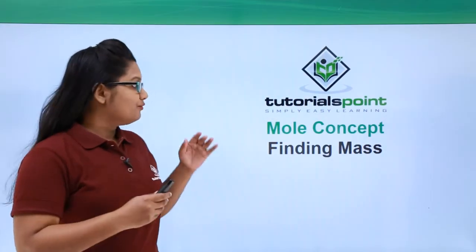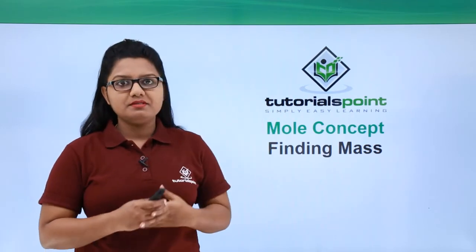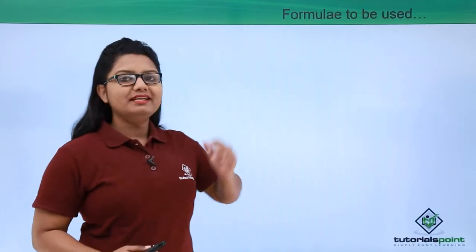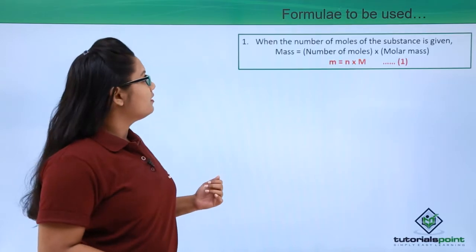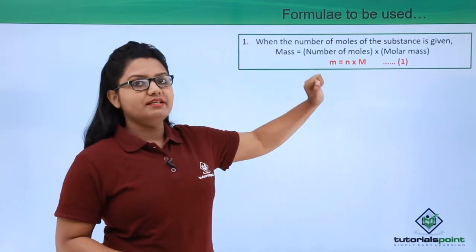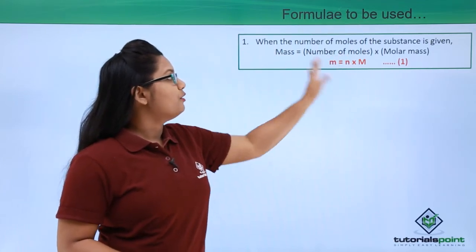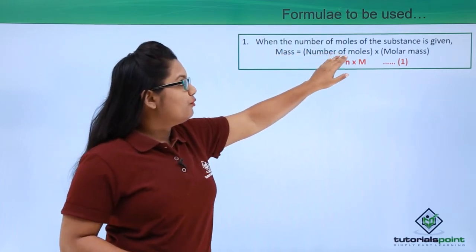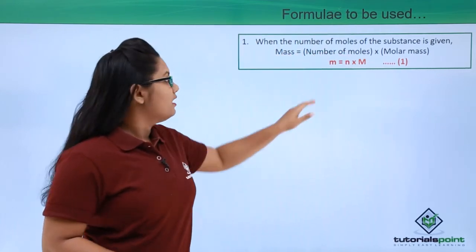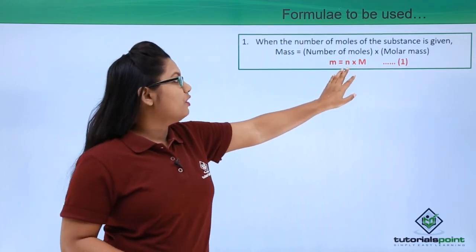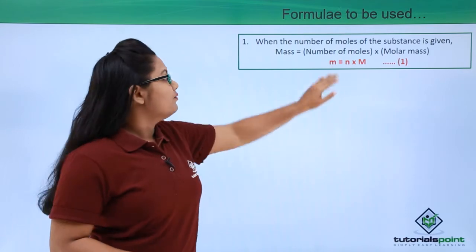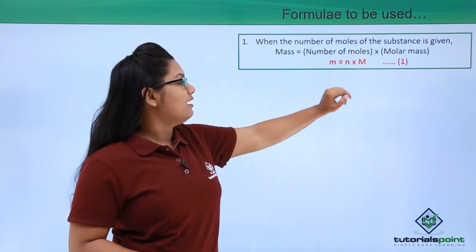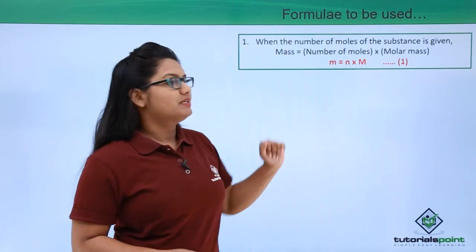In this video we will be discussing problems related to the mole concept, specifically finding the mass of a substance. The formula we will use is: mass equals the number of moles multiplied by the molar mass, written as m = n × M, where m is the mass, n is the number of moles, and M is the molar mass.